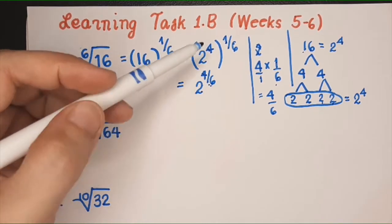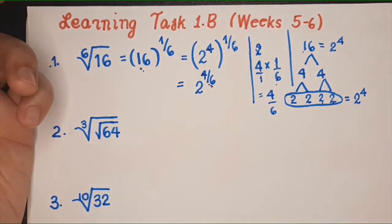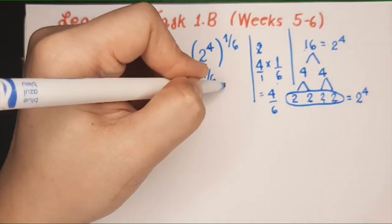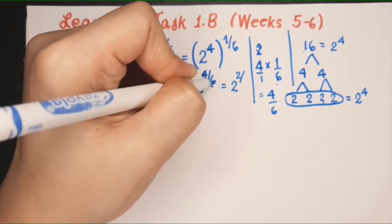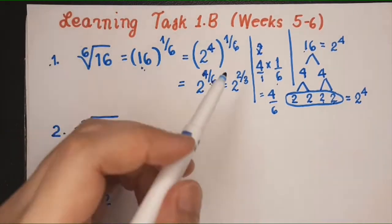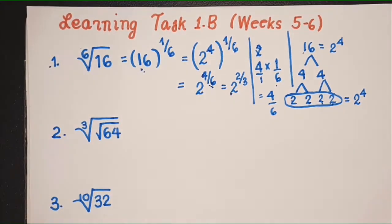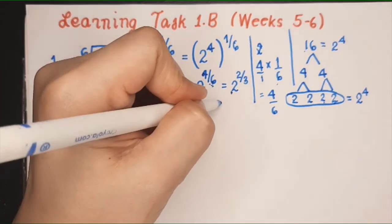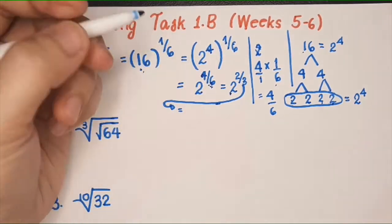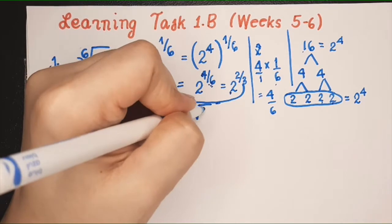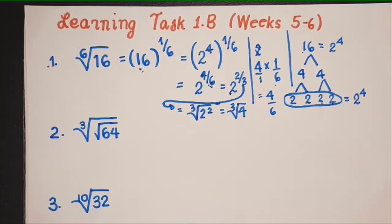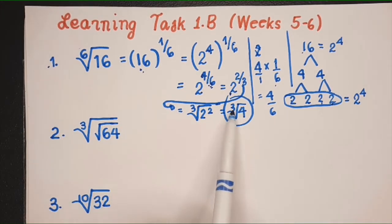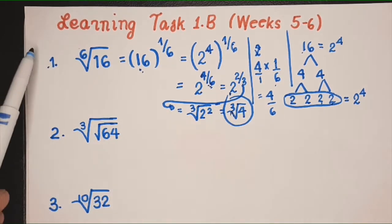You can still simplify this by dividing the numerator and the denominator by 2. The final answer becomes 2 raised to — what is 4 divided by 2? You'll get 2. What is 6 divided by 2? You'll get 3. So this is the answer in rational exponent form: 2 raised to 2 over 3. If you want to write it in radical expression, it can be written as the cube root of 2 squared, which is the cube root of 4. This is the simplest form — the smallest possible index for number 1.